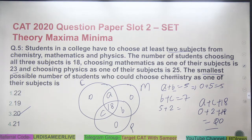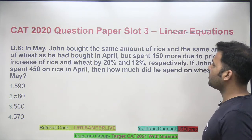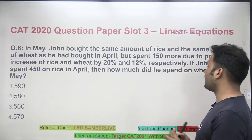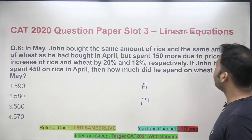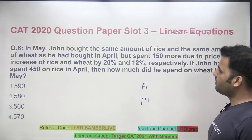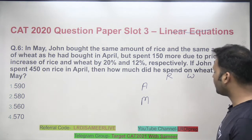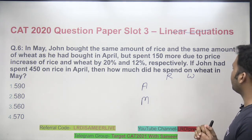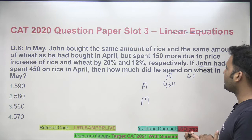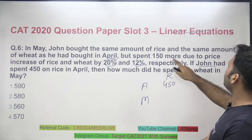Question 6 is a percentage question. In May, John bought the same amount of rice and wheat as in April, but spent 150 more due to price increases of 20% for rice and 12% for wheat. If John had spent 450 on rice in April, how much did he spend on wheat? So in April he spent 450 on rice, and in May prices rose by 20% and 12% respectively.